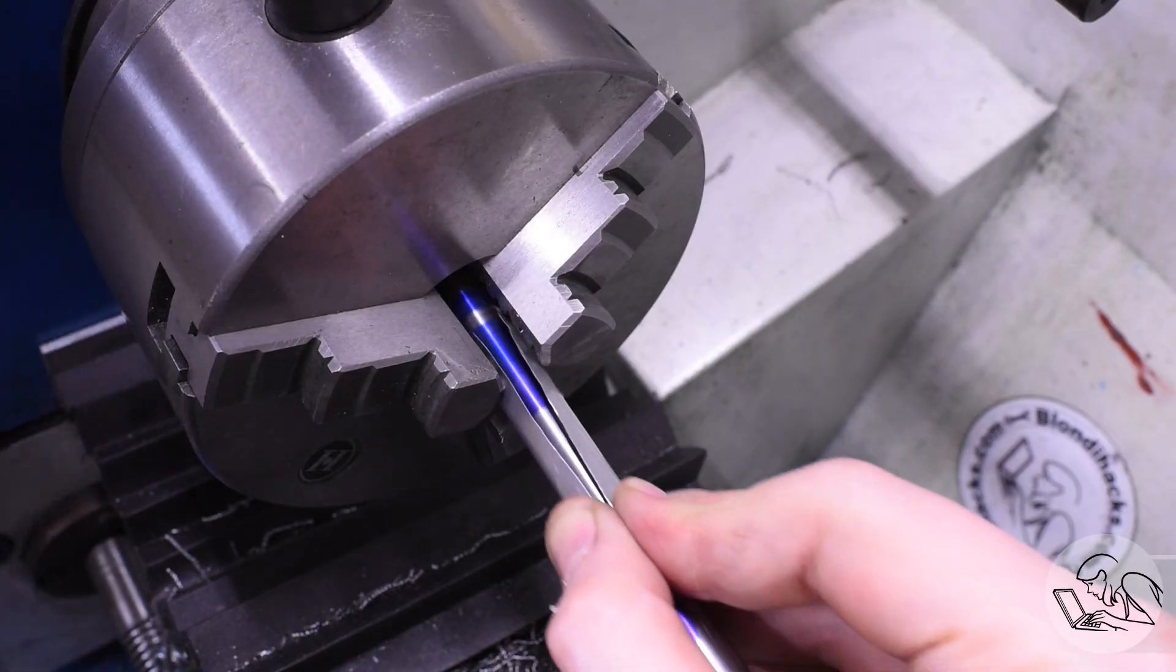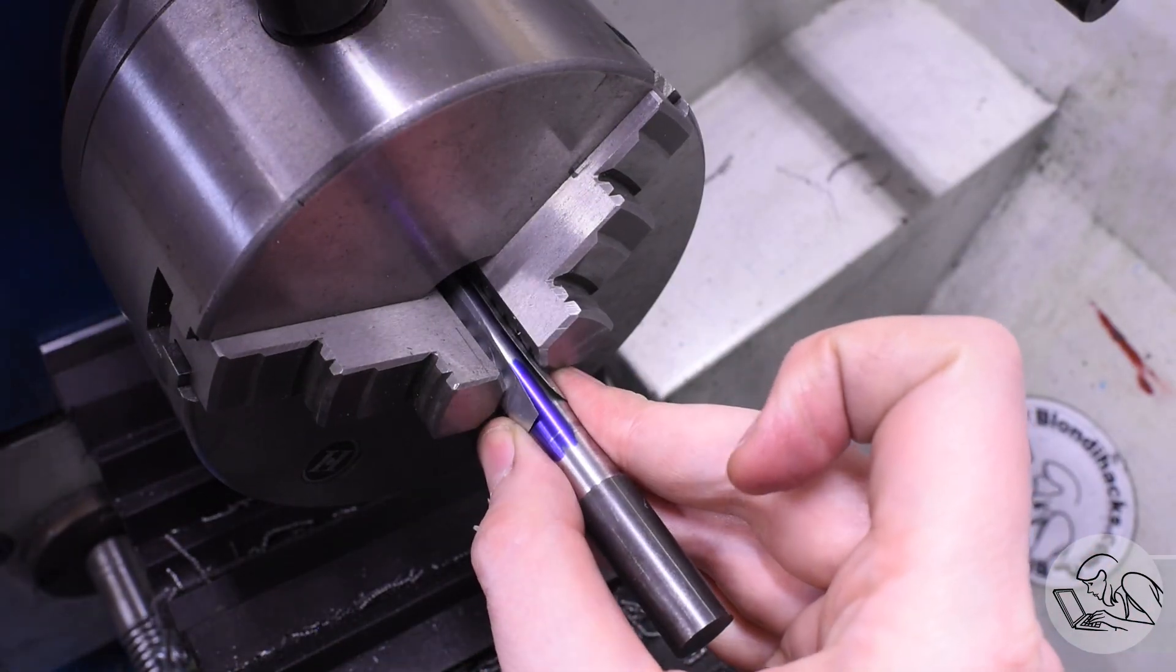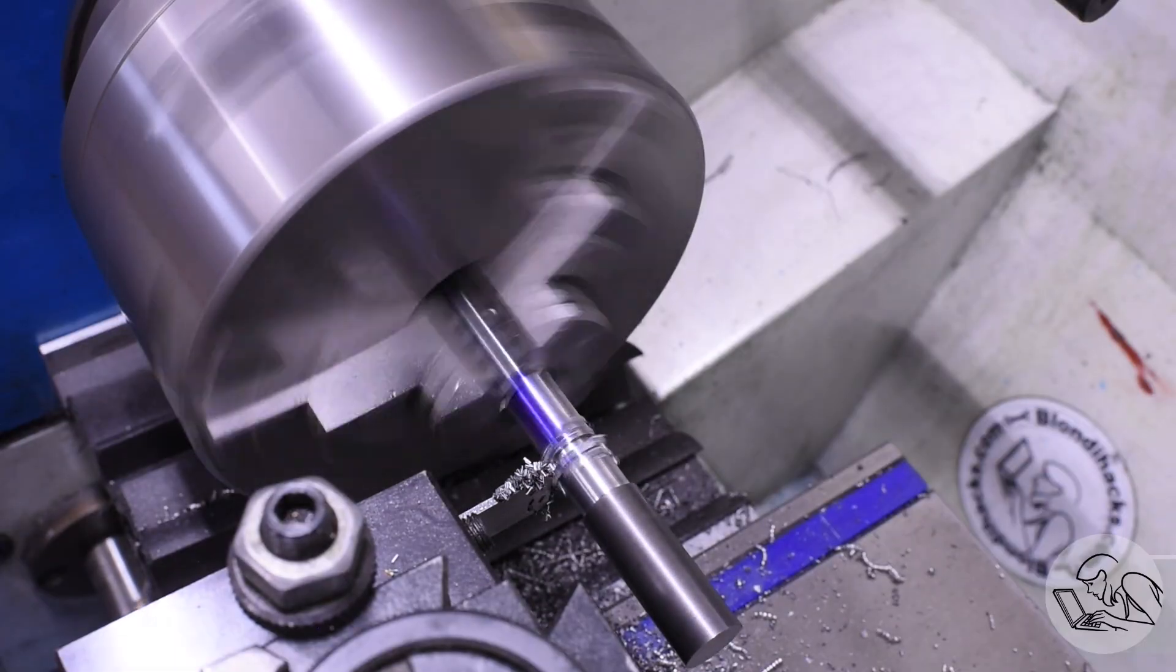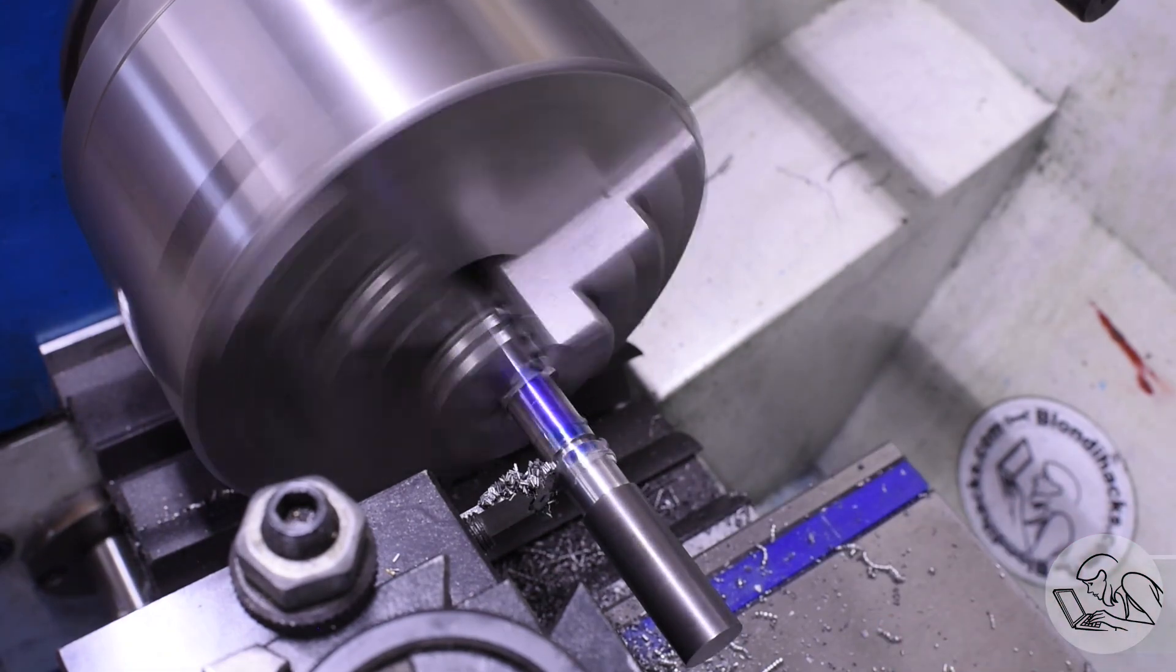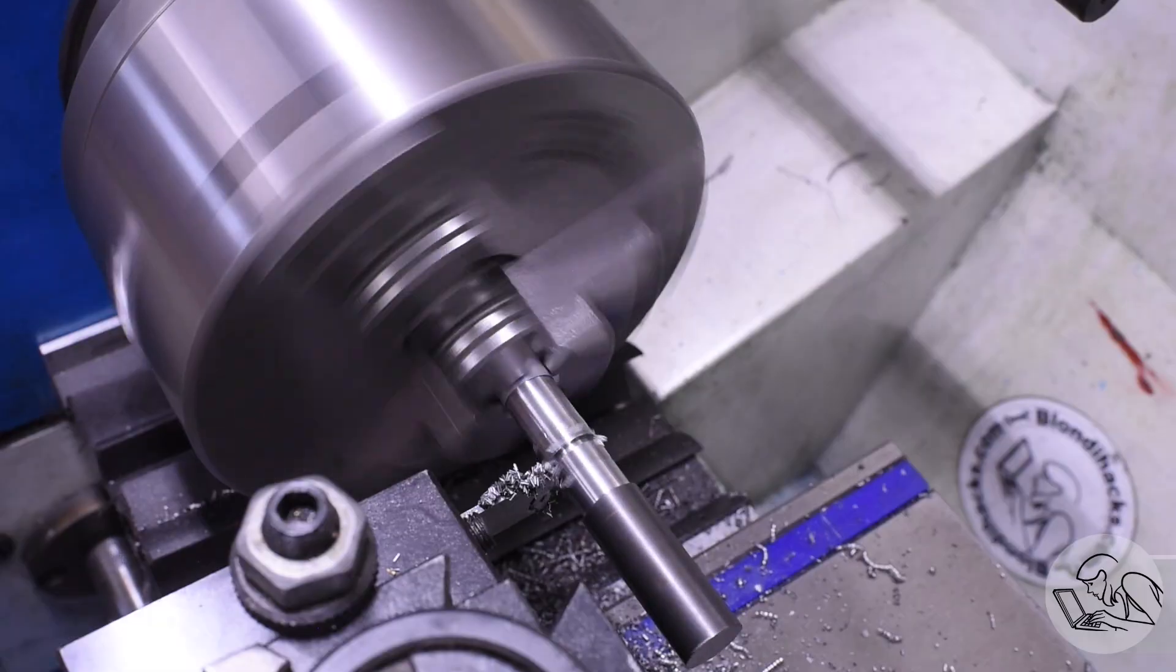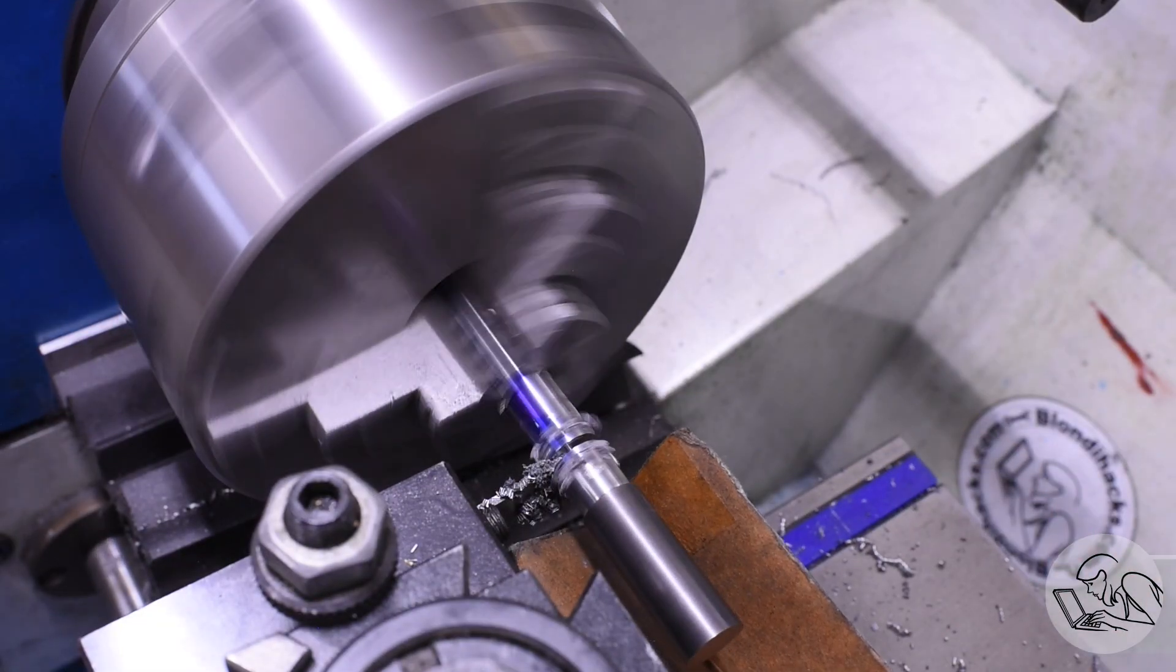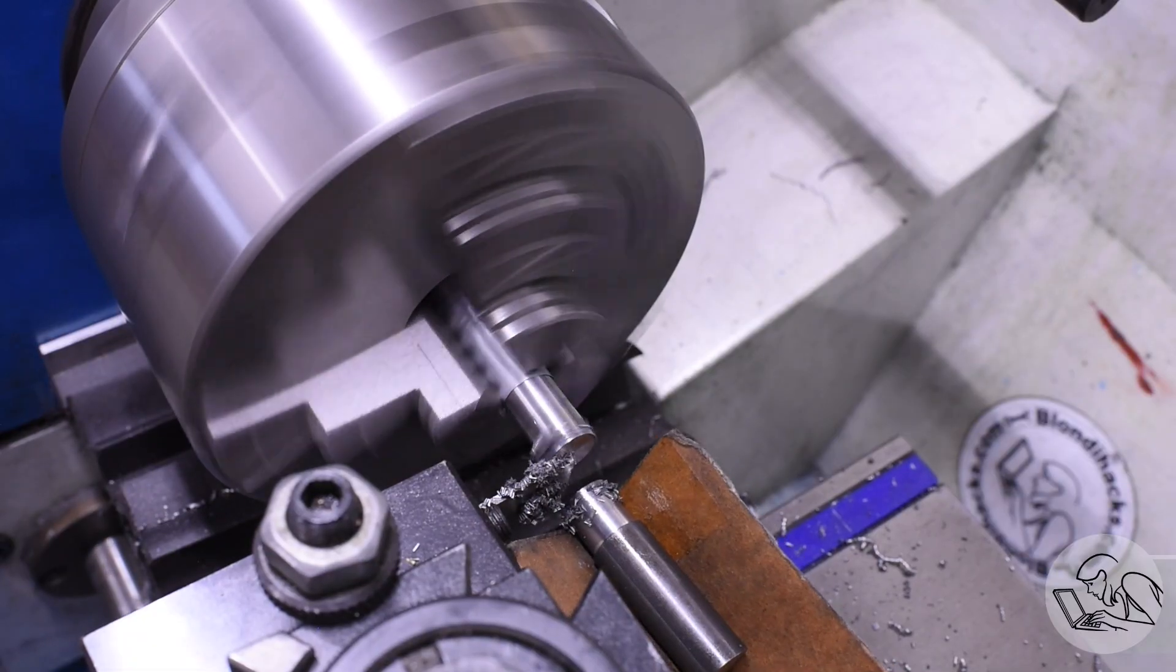For my tommy bar, I'm going to flip it end for end here and cut the remainder of that stock off and then once again add the hemisphere at this end. But again, I've made a concentricity and order of operations decision here. These hemispheres are just for aesthetics and comfort, but if the concentricity of them was important, then I might not want to flip the part and use a file as I did here. I might want to leave it in one setup and use a form tool to cut the hemisphere on the back side of the part, something like that.